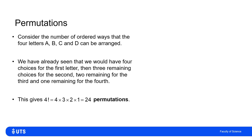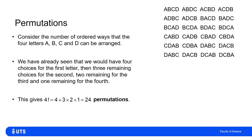And so this gives me four factorial, or four times three times two times one, 24 permutations, and I can write those out.